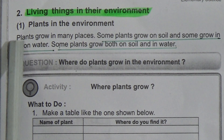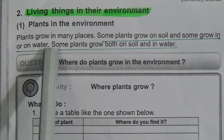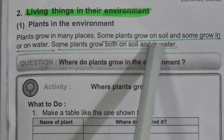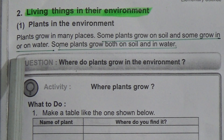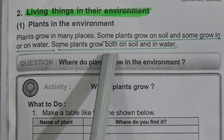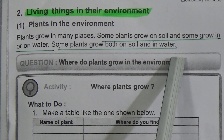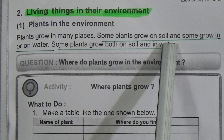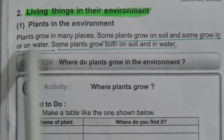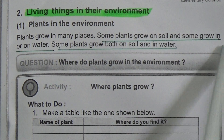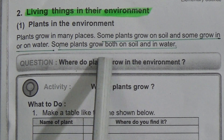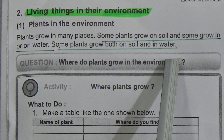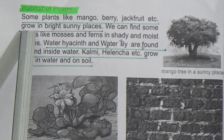Now our topic is 'Living Things in Their Environment.' Plants in the environment: plants grow in many places. Some plants grow on soil and some grow in or on water. Some plants grow both on soil and in water — underline this line.